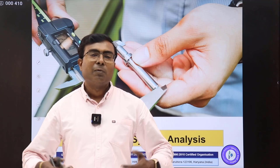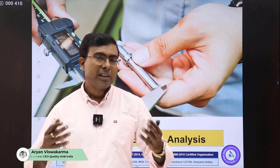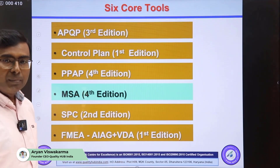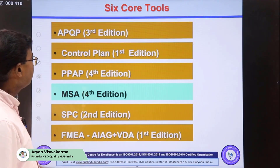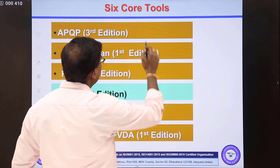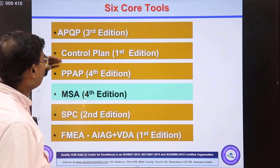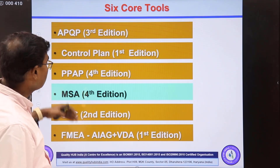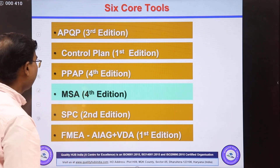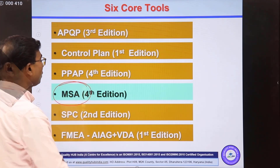Namaskar friends. Welcome to the session of Quality of India. Myself Aryan Viswakarma, and in this session we are going to explore Measurement System Analysis. In quality management system we have six core tools — the foundation of quality management system — which stands for Advanced Product Quality Planning, Control Plan, Production Part Approval Process, Measurement System Analysis, Statistical Process Control, and Failure Modes and Effect Analysis. We are going to explore MSA in this program.